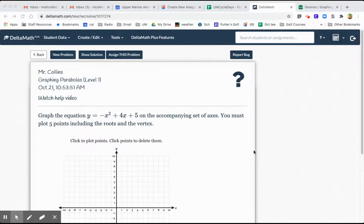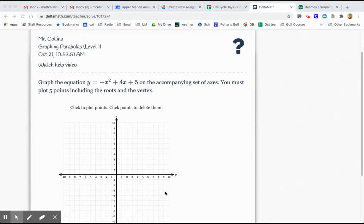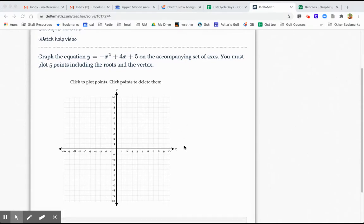Hi guys, I thought I'd make a quick video here about the section of DeltaMath about graphing parabolas. And you can see here we want to graph the equation y equals negative x squared plus 4x plus 5.